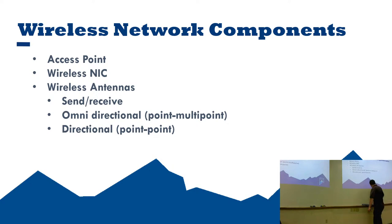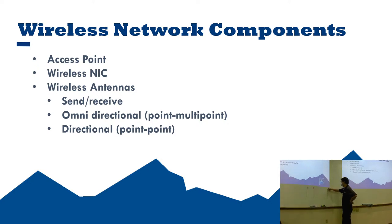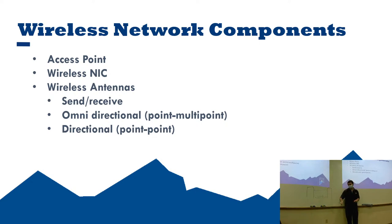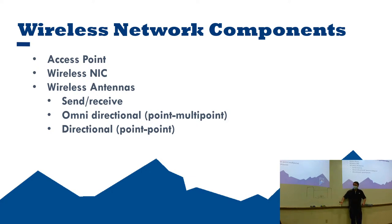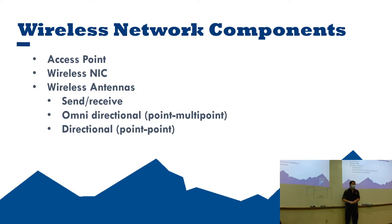If you have two buildings 100 yards apart, why not just run a cable underground or above ground? Where it gets expensive is if the distance is something like 10,000 yards. If the buildings are tall enough, you go to the high points, put a microwave dish up, ensure line of sight, and you have a pretty affordable connection. That's pretty much the only time you'd really use directional antennas.